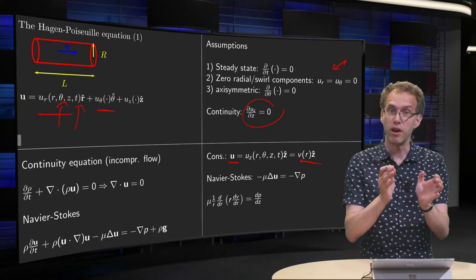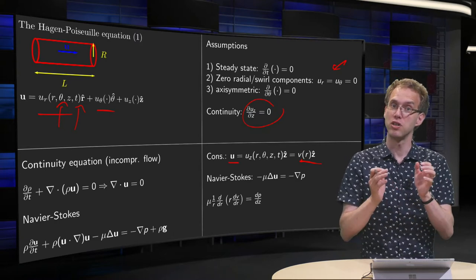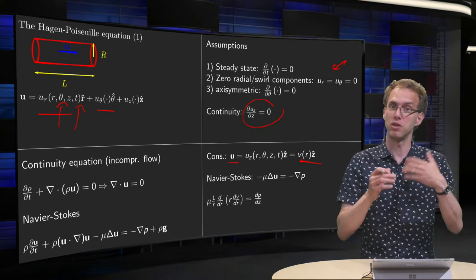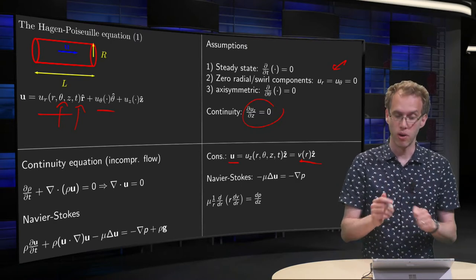So our U is only in the z-direction and only dependent on r, so we denote that. We use a new notation by v of r, where v is a scalar, in the z-direction.